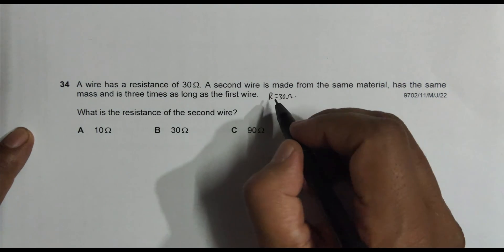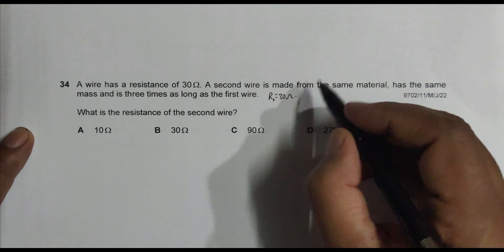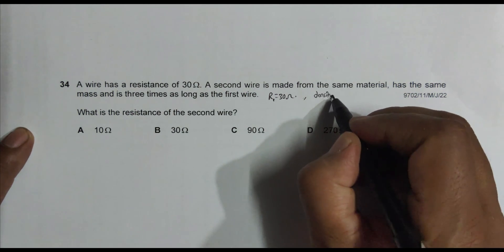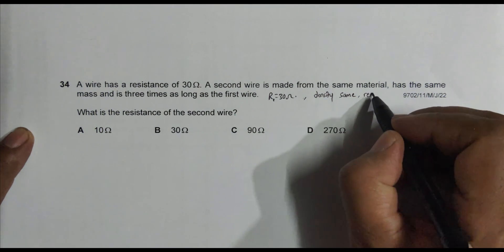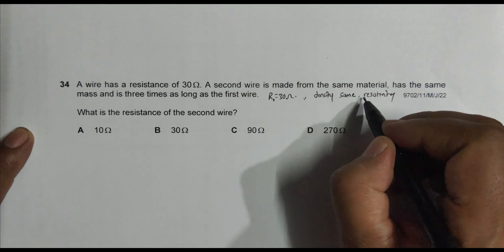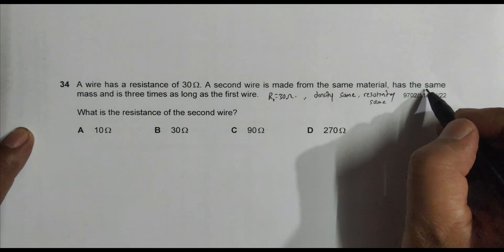A second wire—so this means I must name the first as R1. The second wire is made from the same material, that means the resistivity is the same, and it has the same mass.